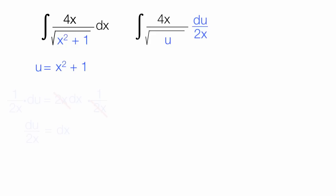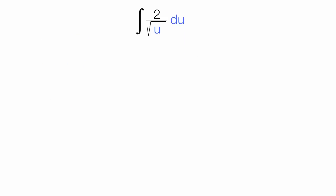Now, if you notice this 2x and this 4x, the x's cancel out. And I'm left with 2 divided by the square root of u du. This looks like something I can actually integrate now. I'm going to move this up and give myself a little bit more space.